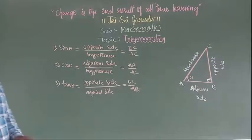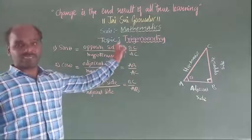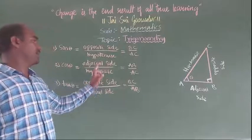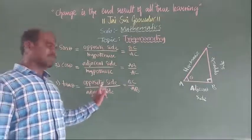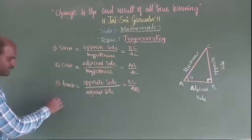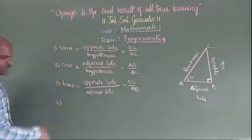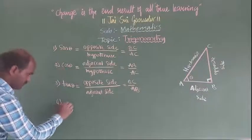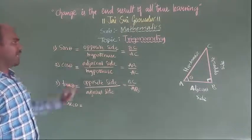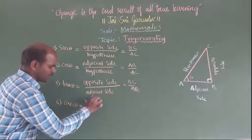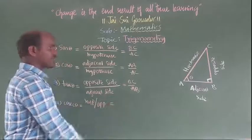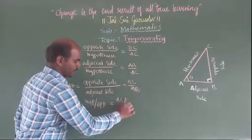So first you want to remember: sin theta is opposite by hypotenuse, cos theta is adjacent side by hypotenuse, and tan theta is opposite by adjacent side. The remaining three are the reciprocals. Cosec theta is hypotenuse by opposite, which equals AC by BC.